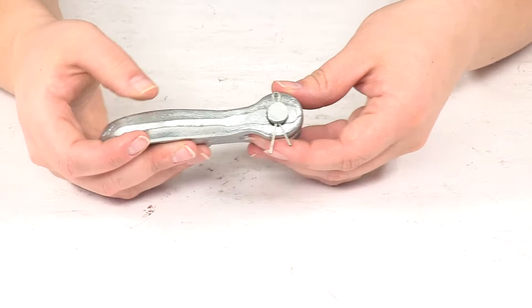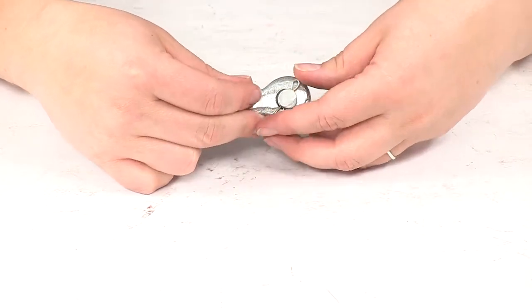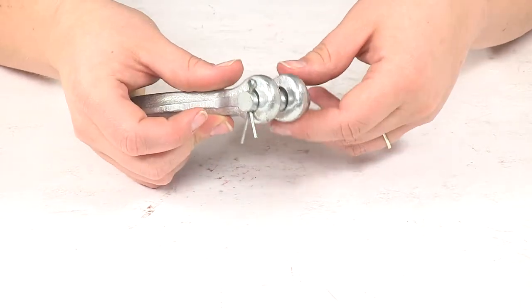When you're ready to attach it, you can just bend the ends of the cotter pin back at least enough to keep it in place, or you can even fold them over to make it more secure.